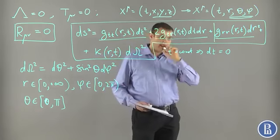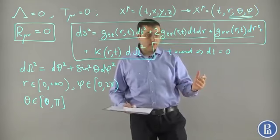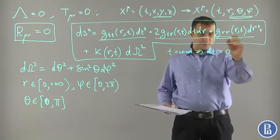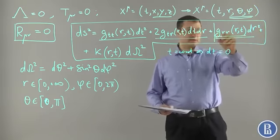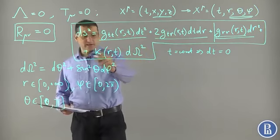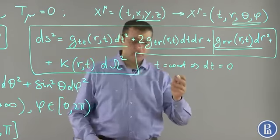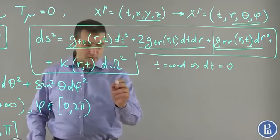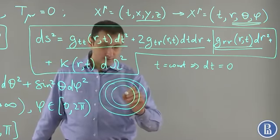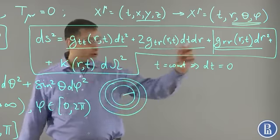This plus this is the spatial part of the metric. This spatial part of the metric for t constant is sliced as onion by spheres whose radii are fixed by this quantity. This part of the metric specifies the radii because it specifies the distances in r, proper distances in r direction. And this part specifies the area, how the area of the spheres is changing.